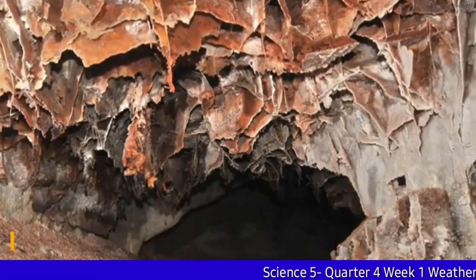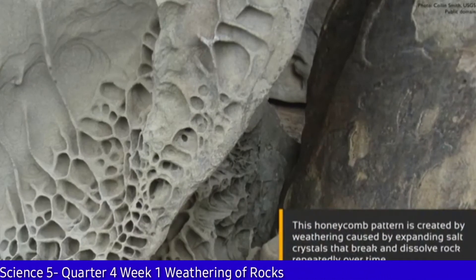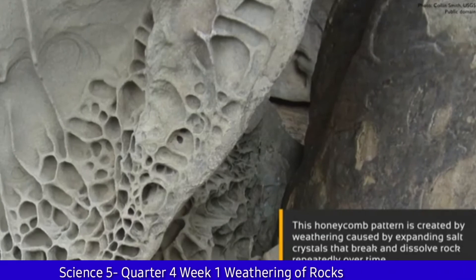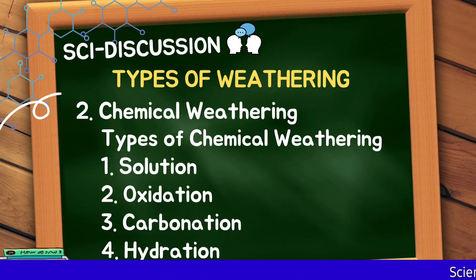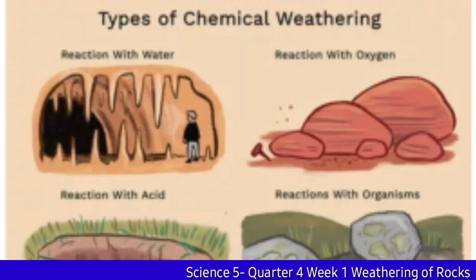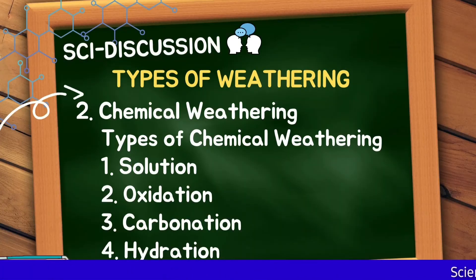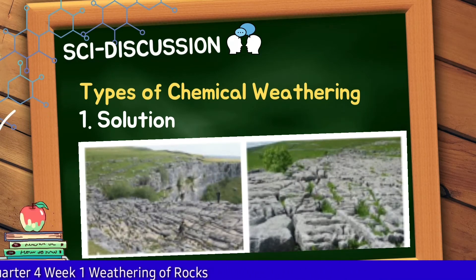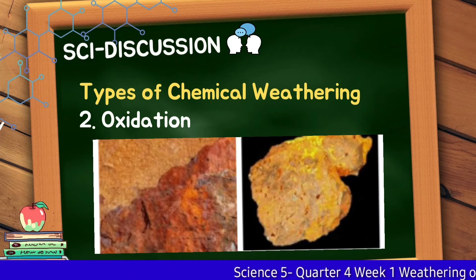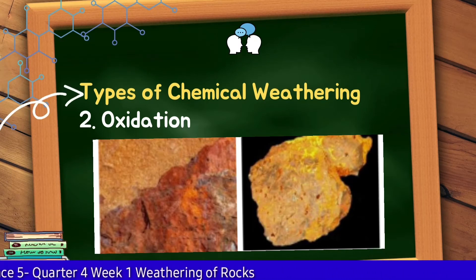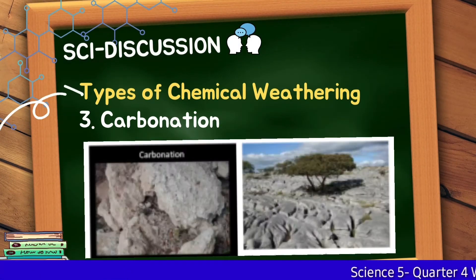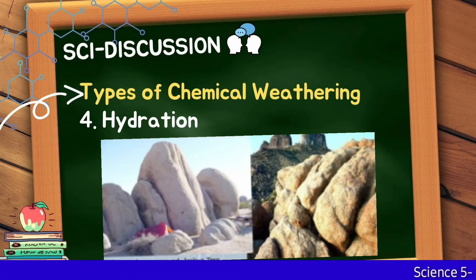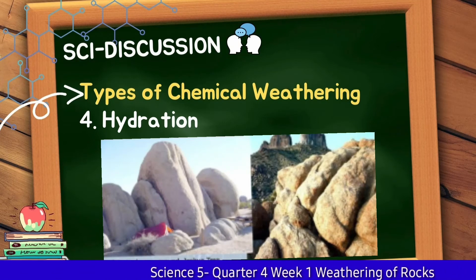Chemical weathering is the decomposition and disintegration of rocks due to chemical reaction with water, causing change in the chemical composition of rocks. There are types of chemical weathering: Solution — the dissolution of soluble particles and minerals from the rocks; Oxidation — the reaction of atmospheric oxygen to form oxides; Carbonation — the reaction of carbonate or bicarbonate ions with minerals; and Hydration — the addition of water to the minerals.